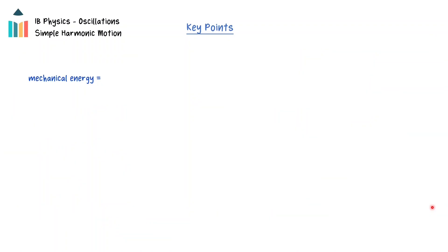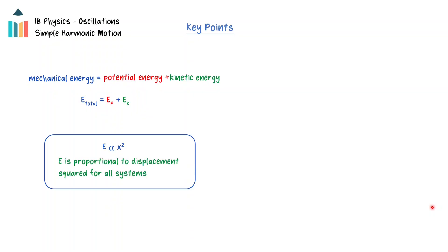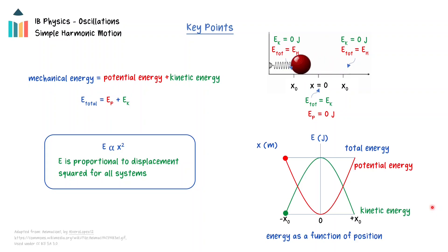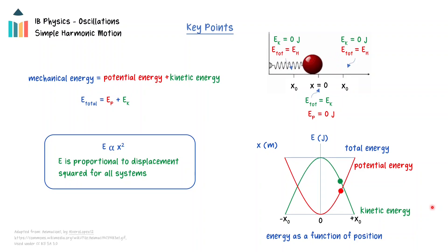The total mechanical energy of a simple harmonic oscillator is the sum of its potential and kinetic energies. This total energy is proportional to the square of the amplitude of the oscillator. As the system undergoes simple harmonic motion, the total energy remains constant and transfers between kinetic and potential energies. At the maximum displacements, the kinetic energy is zero and the total energy is in the form of potential energy. At the equilibrium position, the potential energy is zero and the total energy is in the form of kinetic energy. The potential and kinetic energies form parabolas when graphed as a function of the position of the oscillator.